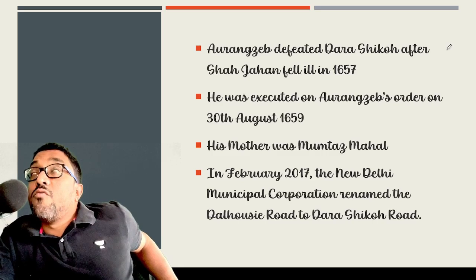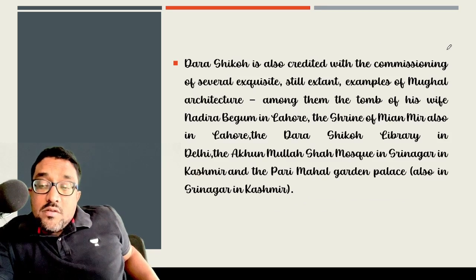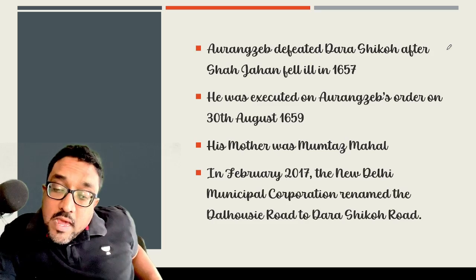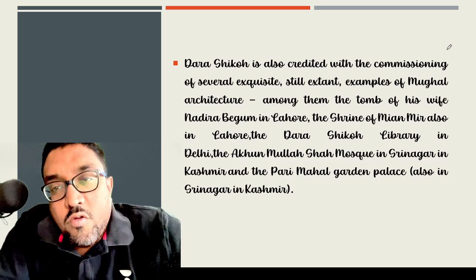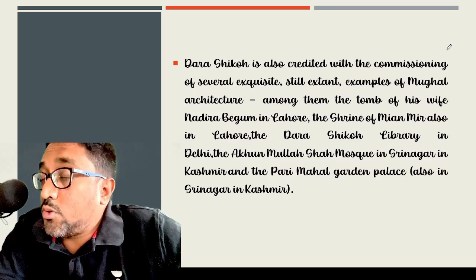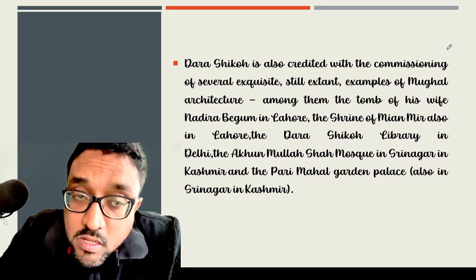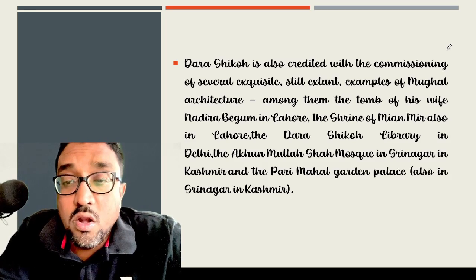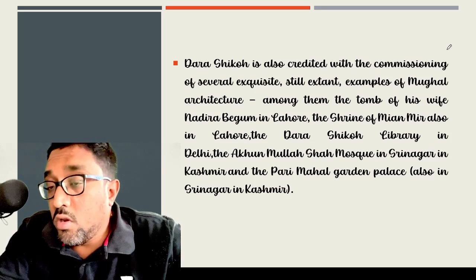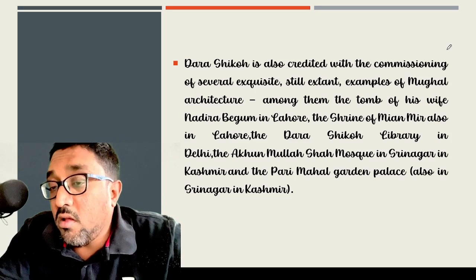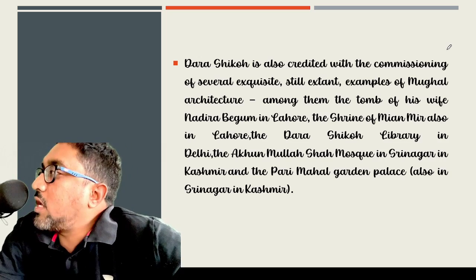Dara was the son of Mumtaz Mahal, the most beloved wife of Emperor Shah Jahan. In February 2017, the New Delhi Municipal Corporation even renamed the Dalhousie Road as Dara Shikoh Road. Dara Shikoh wrote a lot of books during his period. He is credited with commissioning several exquisite examples of Mughal architecture — among them the tomb of his wife Nadira Begum in Lahore, the Shrine of Miyameer also in Lahore, the Dara Shikoh Library in Delhi, the Ahun Mullah Shah Mosque in Srinagar, and Pari Mahal or Garden Palace in Srinagar. Apart from Majma ul Bahrain, there are a series of books which Dara Shikoh wrote during his period.